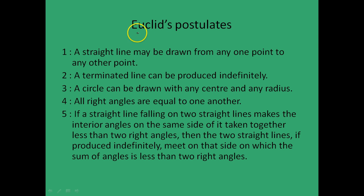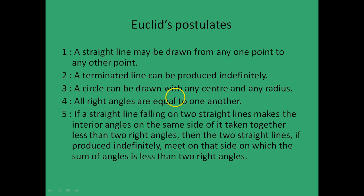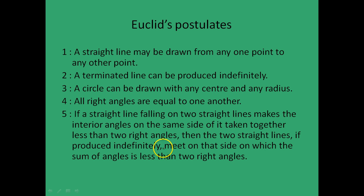Euclid then states postulates on which Euclidean geometry is based. The first: a straight line may be drawn from any one point to any other point. Second: a terminated line can be produced indefinitely. Third: a circle can be drawn with any center and any radius. Fourth: all right angles are equal to one another. Fifth: if a straight line falling on two straight lines makes the interior angles on the same side less than two right angles, then the two straight lines, if produced indefinitely, meet on that side.